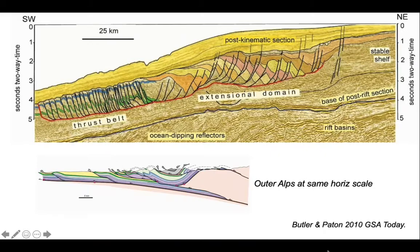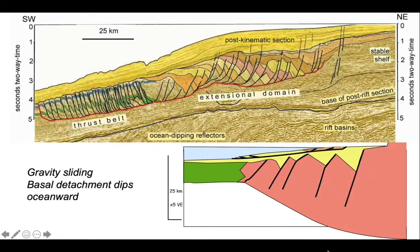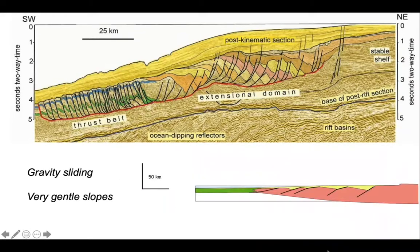What about the context for the submarine system? Here's a cross-section through the continental margin — this has got a five-to-one vertical exaggeration. Our submarine system is forming on a down-to-the-ocean dipping detachment; in other words, it's sliding. The basal detachment dips oceanward. At crustal scale without vertical exaggeration, the slopes we're dealing with here are very gentle indeed.